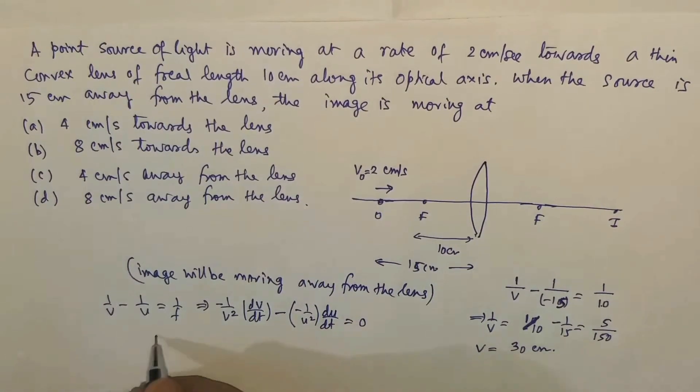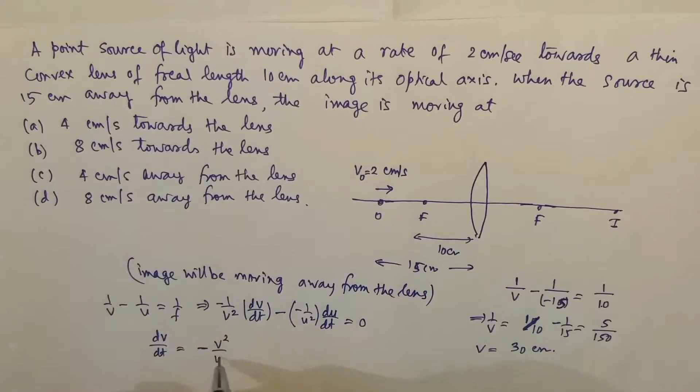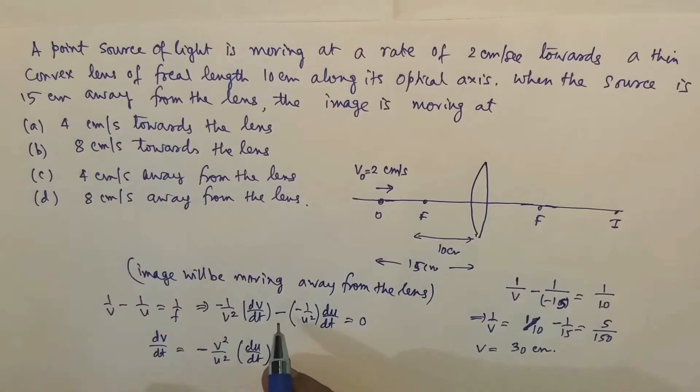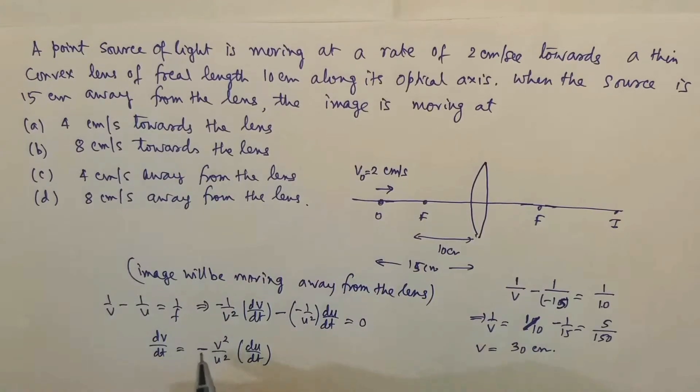So from there, dv/dt = -v²/u² × du/dt. Just check it if it is negative or positive. This is positive, this will go to the other side, so it just becomes positive.